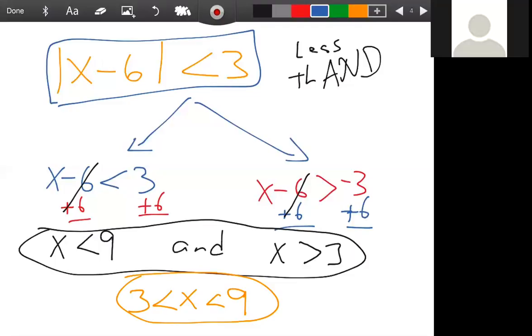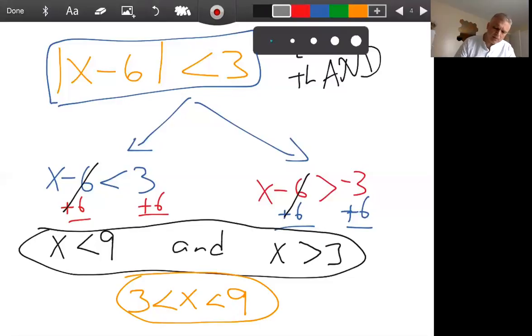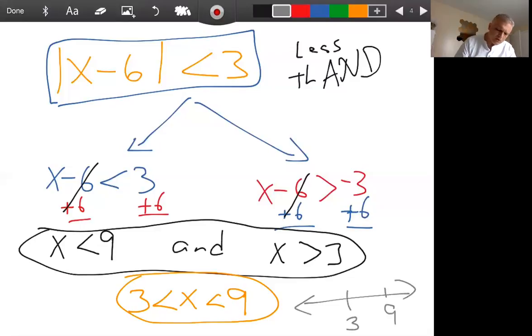And then for the number line, would I just do it at like 9 and 3? Yeah, if you were going to make the number line, if they said graph it, you would put a 9, you would put a 3. Because there's no OR equal to, you would put open circles. So let's see, it's a good different color. Open circles.